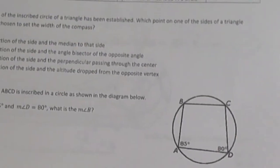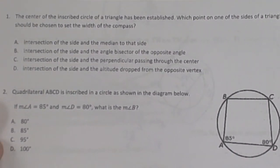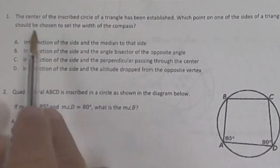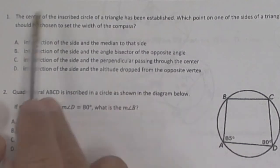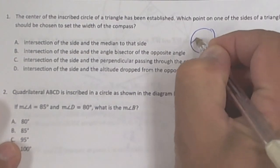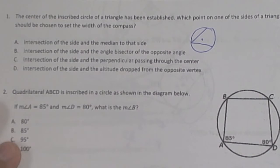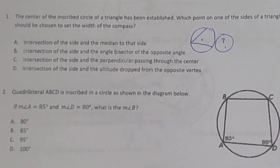This problem asks about the center of the inscribed circle of a triangle — the incenter has been established, and they want to know which point on one of the sides of the triangle should be chosen to set the width of the compass. We didn't do one like this, so I'm going to put a question mark on that one for now.